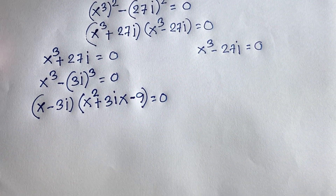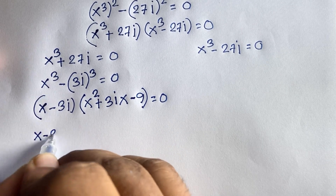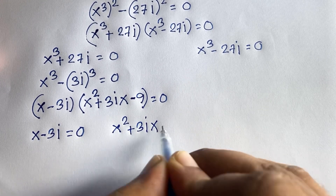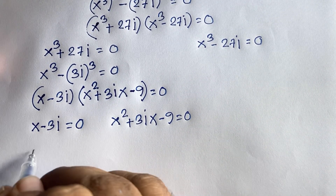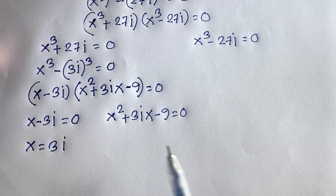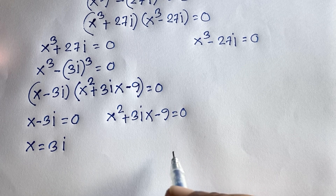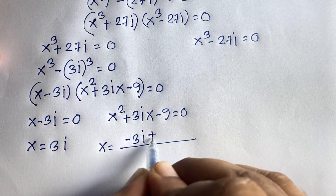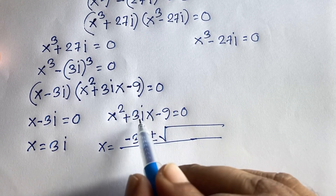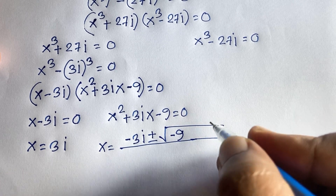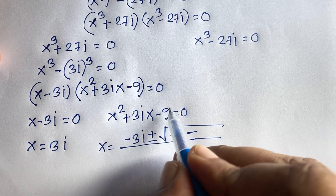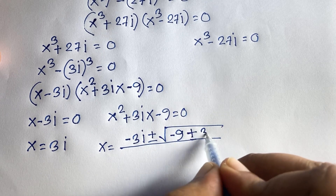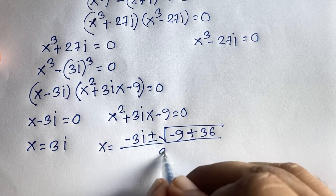From Case 1, setting the first factor to zero gives x minus 3i equals 0, so x equals 3i. The second factor gives a quadratic: x squared plus 3ix minus 9 equals 0. Applying the quadratic formula: x equals minus b, where b is 3i, plus or minus the square root of b squared minus 4ac. Here b squared equals 3i squared equals minus 9, and 4ac equals 4 times 1 times minus 9 equals minus 36.